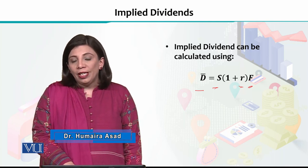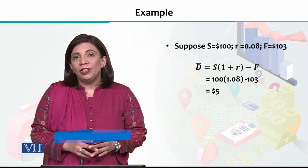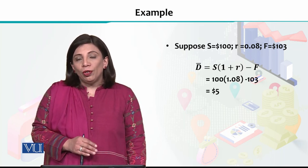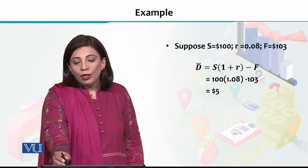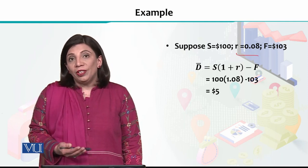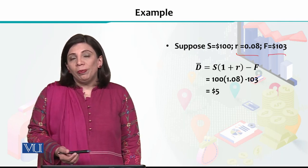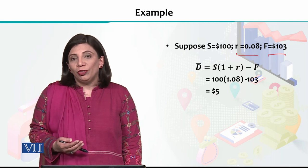To explain this, I am going to use an example. Suppose our spot price of a certain asset is $100 and your rate of return is 0.08. It can be the risk premium also. And your future price, suppose you also know, is $103.